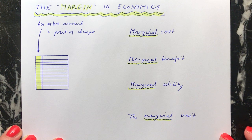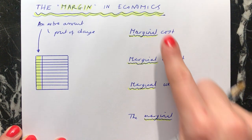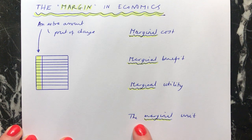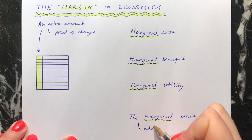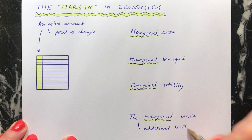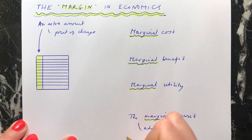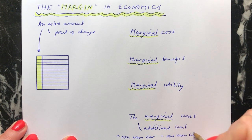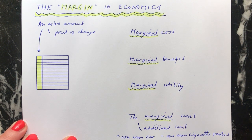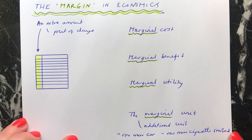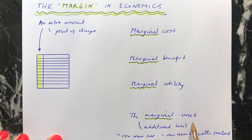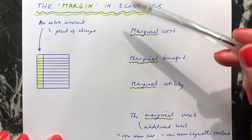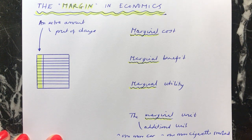Economists are often doing experiments to try and predict what's going to happen if there is a change. They'll do calculations to see if one thing changes, how will it affect everything else. The marginal unit in anything is the additional unit. For example, this could be one more car being produced in a factory, or one more cigarette being smoked. Usually we're talking about one more of something, but in general it's an extra amount — it could be 10 more units or 100 more units.